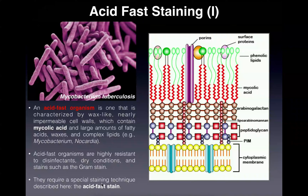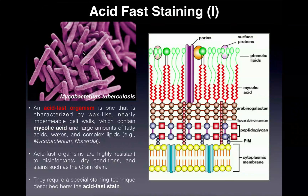Here's an example of an acid fast organism. These are bacilli belonging to the species Mycobacterium tuberculosis, which as the name suggests is the causative agent of the disease tuberculosis. In fact, one of the genera that is acid fast is Mycobacterium, the other being Nocardia, which we'll discuss a little more on the next slide. Those are the two major genera that belong to the acid fast classification.